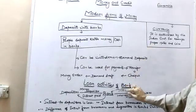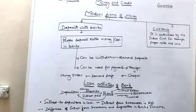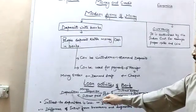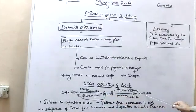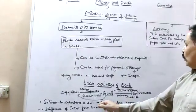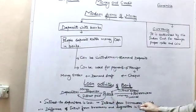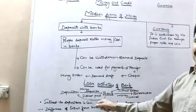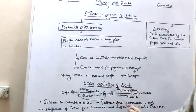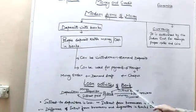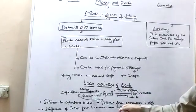Our next topic is the loan activities of banks. Depositors deposit money in the bank, and borrowers take money from the bank. When a depositor deposits money, the bank pays interest to the depositor. And the bank charges interest from borrowers — here the borrower is paying interest to the bank.